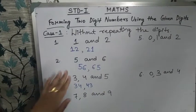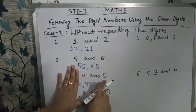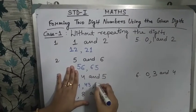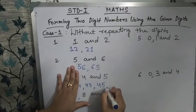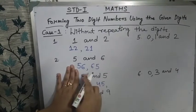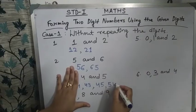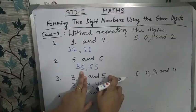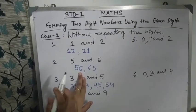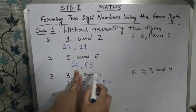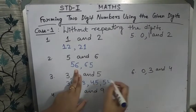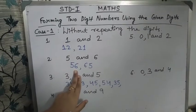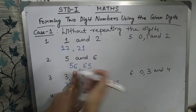Now cover 3 and make numbers with 4 and 5. We get 4, 5 — that is 45, then reverse: 5, 4 — that is 54. Then cover 4 and make numbers with 3 and 5. We get 3, 5 — that is 35, and the last number is 5, 3 — that is 53.